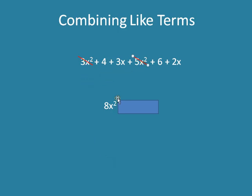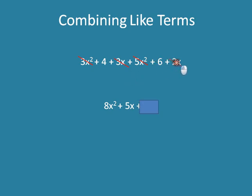Now I'm going to look at my x's. This one doesn't have any x after it, but here's 3x, and 6 doesn't have an x, and there's 2x. So 3x plus 2x is 5x. And then I'm left with what's left — none of the numbers remaining have any variables after them. So I can go 4 plus 6, and I know that 4 plus 6 is just 10.